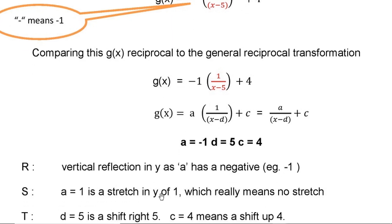So we have a vertical reflection in y because a is negative. Then a is 1. a is 1, that is, it is stretch in y by 1, which really means no stretch. So a equal to 1 means no stretch. There is nothing going on. If it would have been say 2, then it would have been a stretch in 2. But this is 1, there is no stretch.